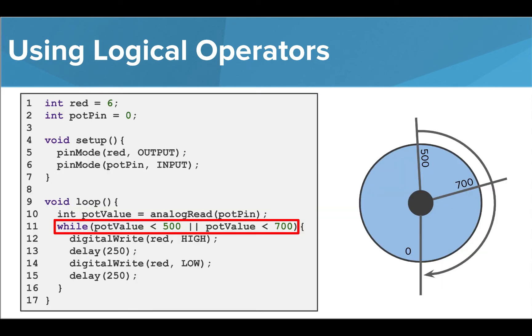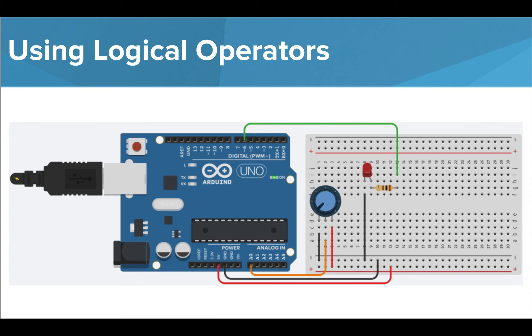But if we instead use an OR operator inside our condition, the LED will blink any time the potentiometer reads a value greater than 500, or any time the value is below 700. This means the LED will blink for any and all potentiometer values. As we can see when this program is run, the value of the potentiometer has no effect on the blinking LED.